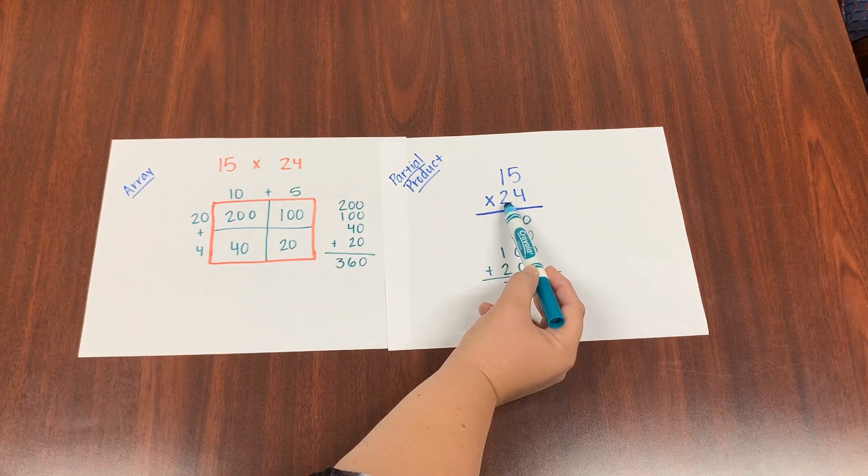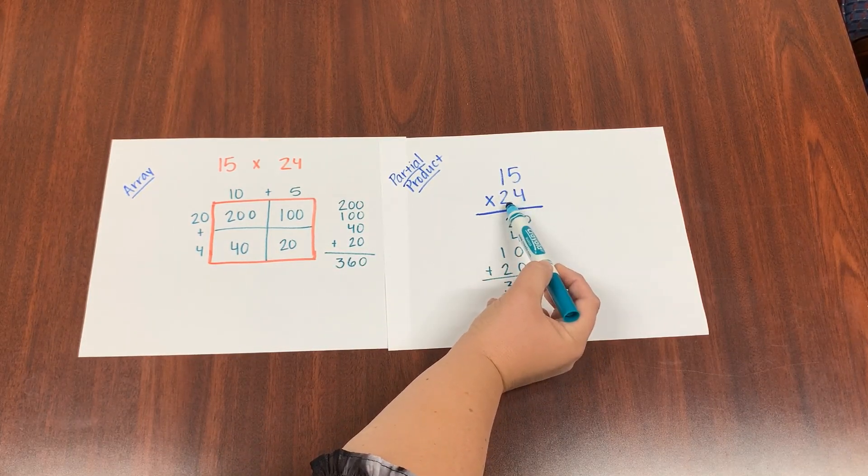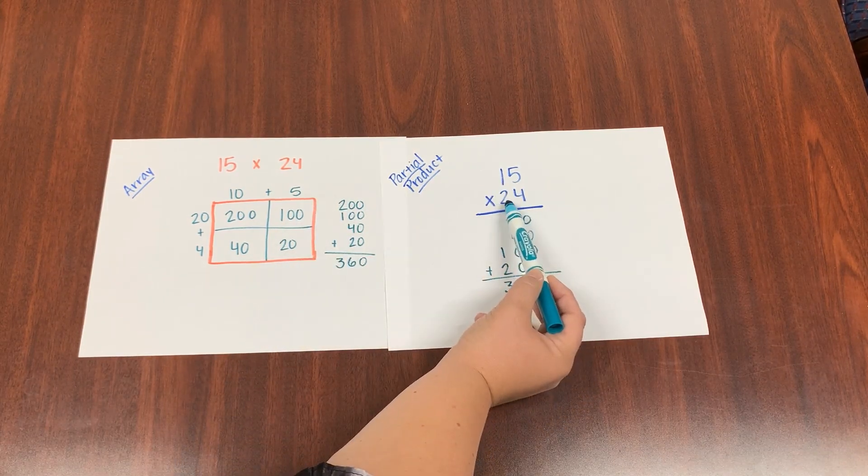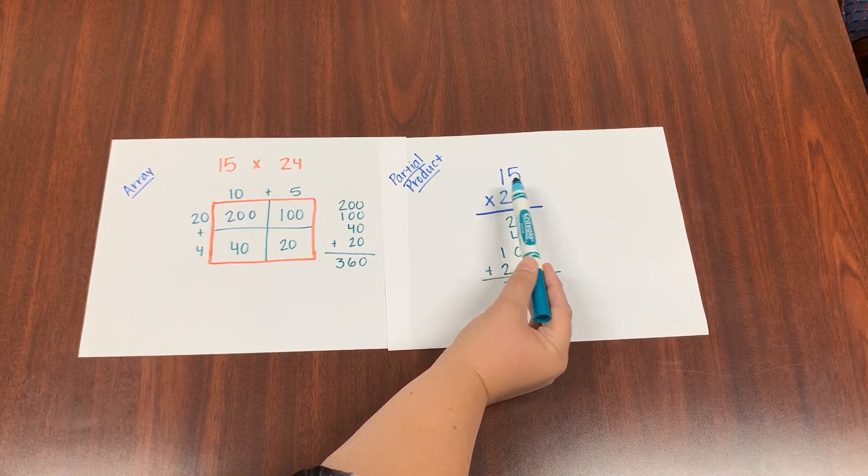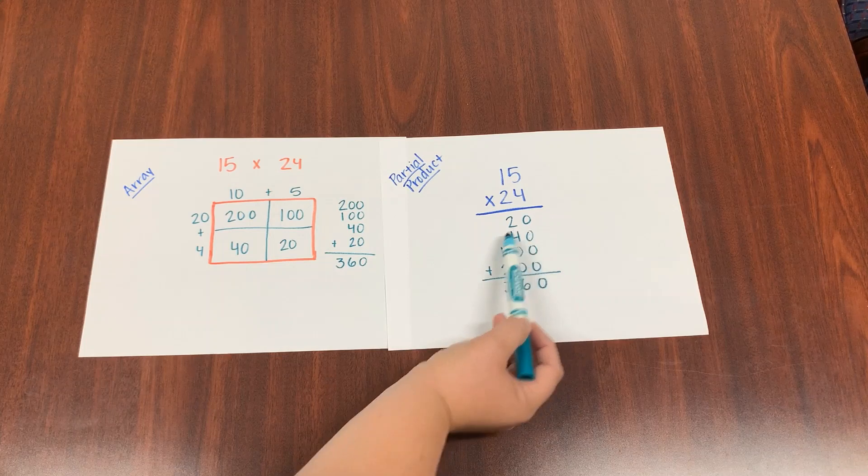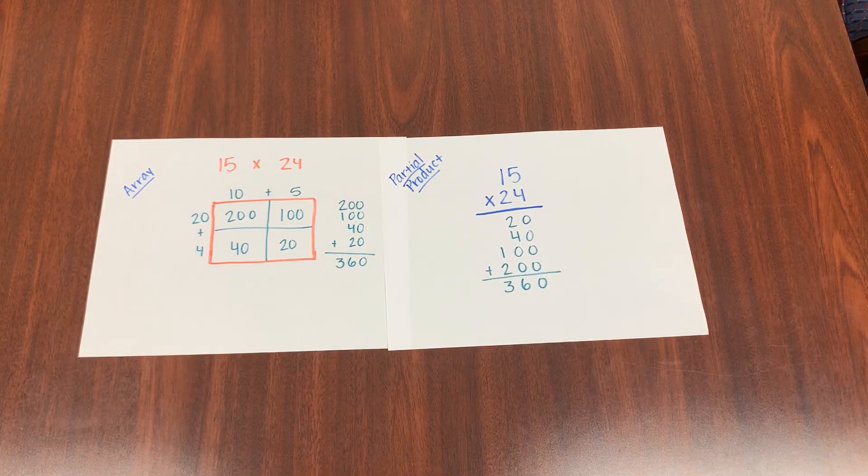Then I'm going to do the 20 times 5, because that 2's in the tens place. 20 times 5 is 100. There's my 100. And then 20 times 10, that one's in the tens place, is 200. There's 200. Notice these four numbers are the same. So we're just doing the same thing, just without the fancy box.